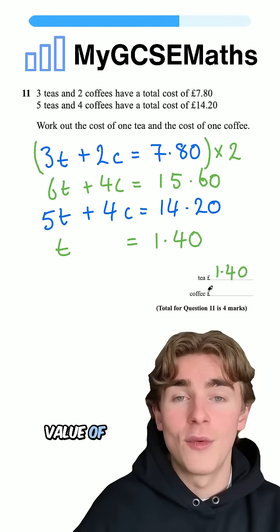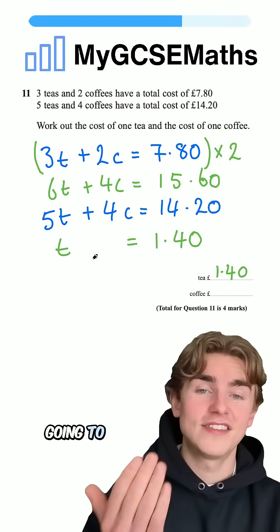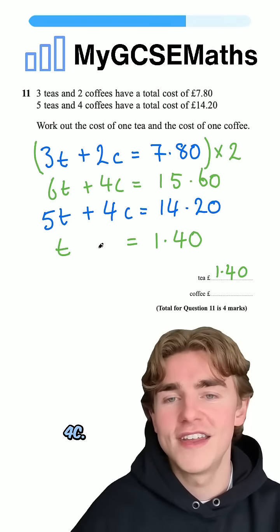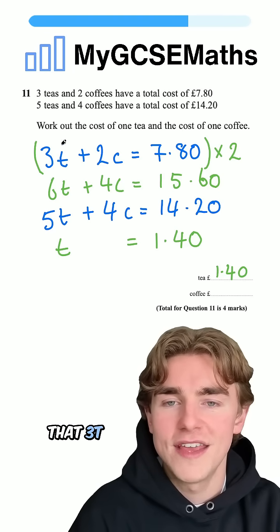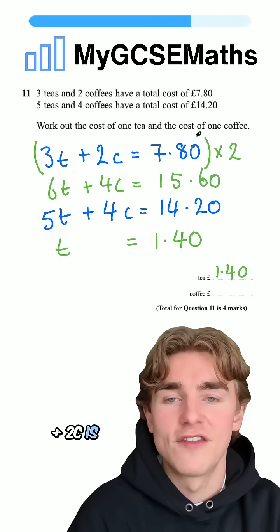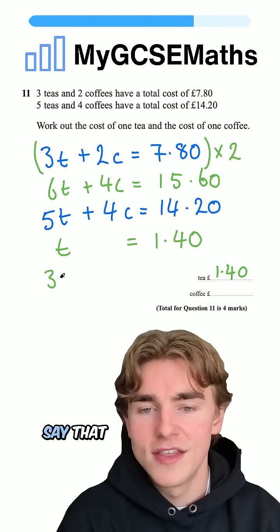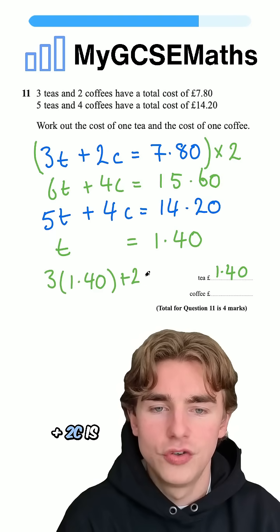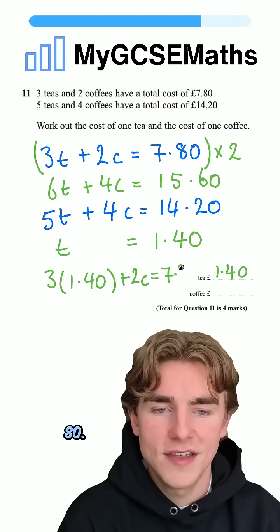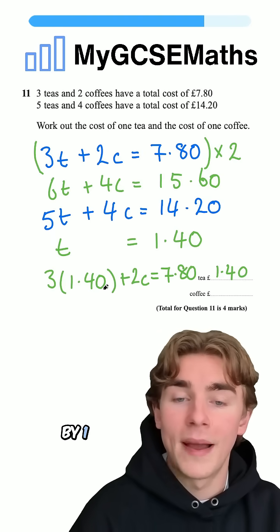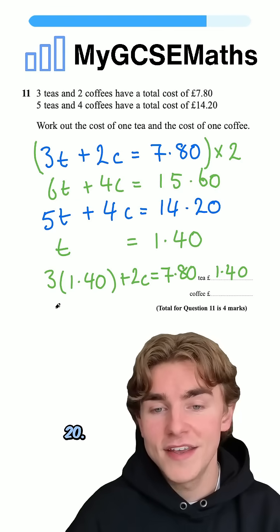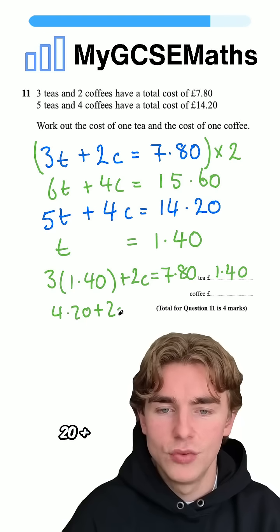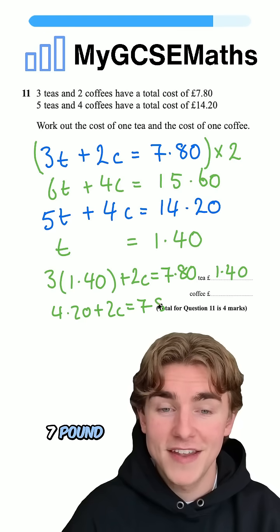But what about the value of our coffee? In order to get this, we're going to substitute our t back in and rearrange for c. Let's do it. So we know that 3t plus 2c is seven pound 80. So we can say that 3 times by one pound 40 plus 2c is going to be seven pound 80. Three times by one pound 40 is going to be four pound 20. So we're going to have four pound 20 plus 2c is equal to seven pound 80.